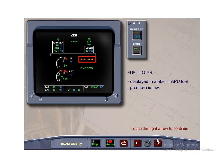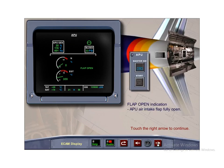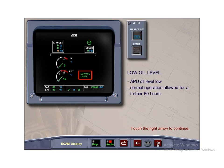The amber warning message Fuel Low Pressure is displayed when low APU fuel pressure is detected. The flap open indication is displayed in green when the APU air intake flap fully opens with the APU master switch pushed on. The low oil level advisory is displayed if the ECB detects a low APU oil level while the aircraft is on the ground and when the APU is not running. APU operation is allowed for a further 60 hours.